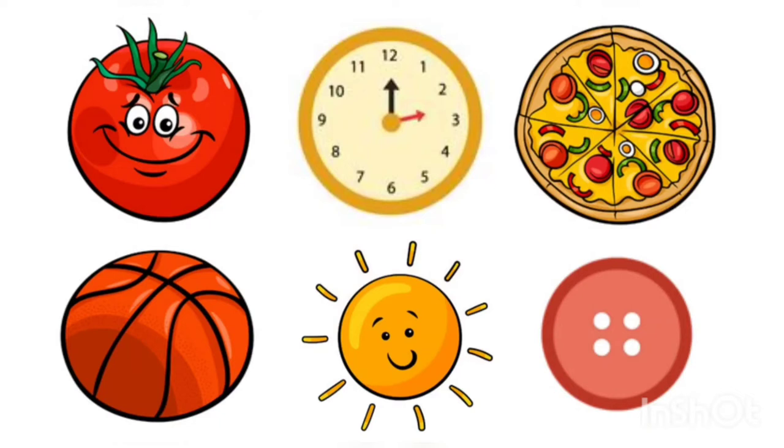Circle. This is a circle. It has zero sides and zero vertex. These are some examples of circle: a drawing of tomato, ball, clock, sun, pizza, and button. Children, you can also think of some more examples of circle which you see all around you.